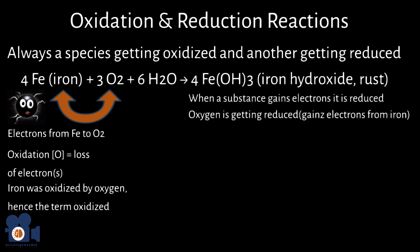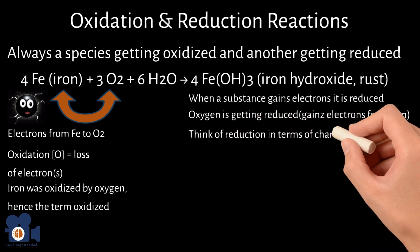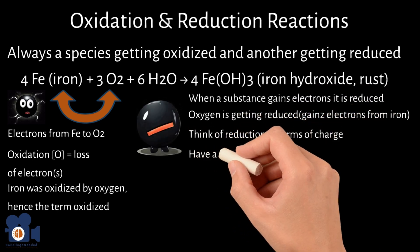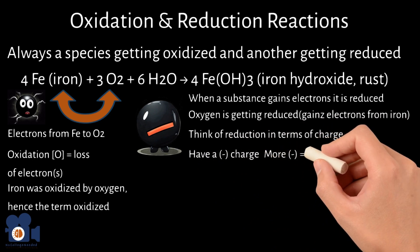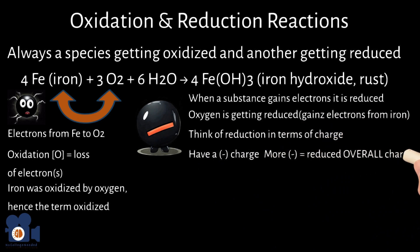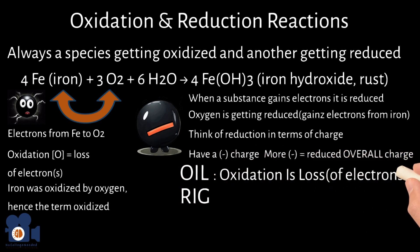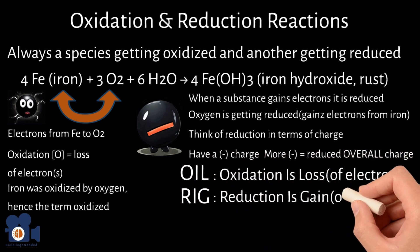The reduction term might not make as much sense, but if you think about it in terms of charge, the electrons have a negative charge, so if you gain more of them, your overall charge will be reduced. However, the easiest way to remember the definitions of oxidation and reduction is with the acronym OILRIG. Oxidation is loss of electrons, and reduction is gain of electrons.